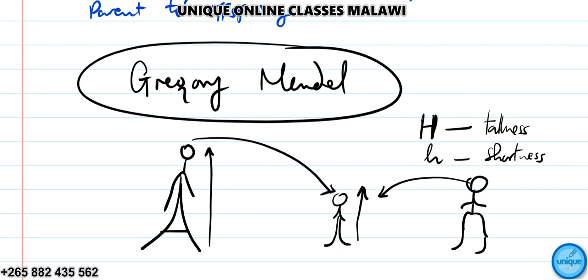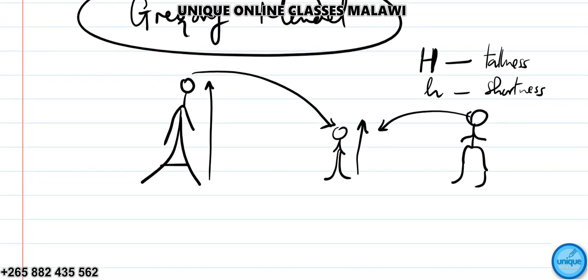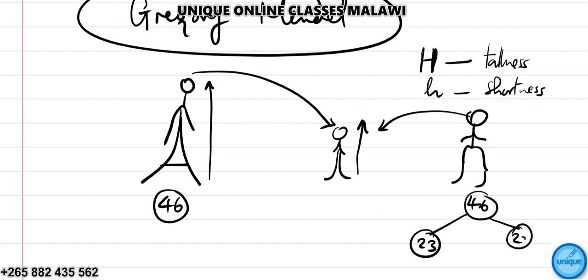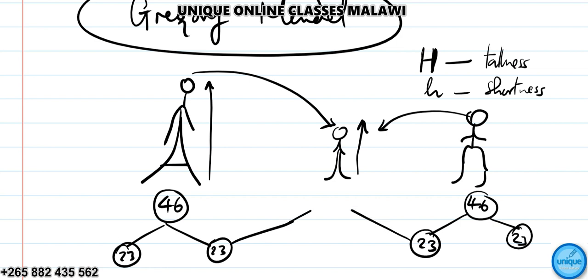A human being has 46 chromosomes. These come in pairs, so we have 23 from the father and 23 from the mother. After fertilization, you get a combination. Genes come in pairs — one from each parent — controlling a given character.